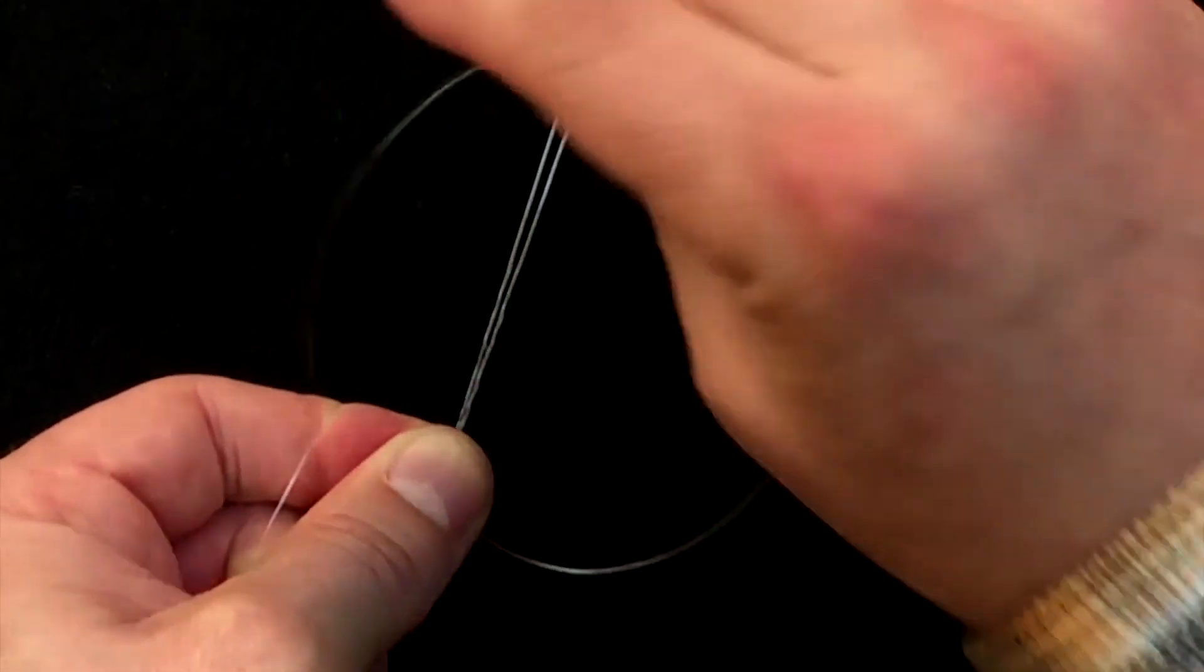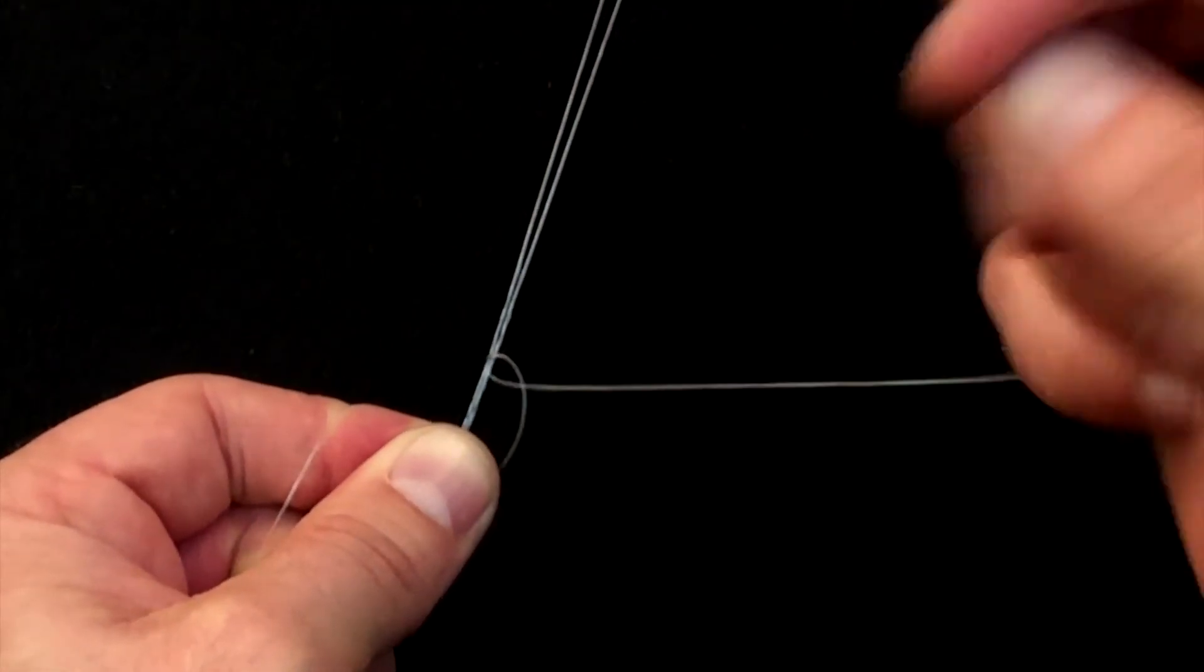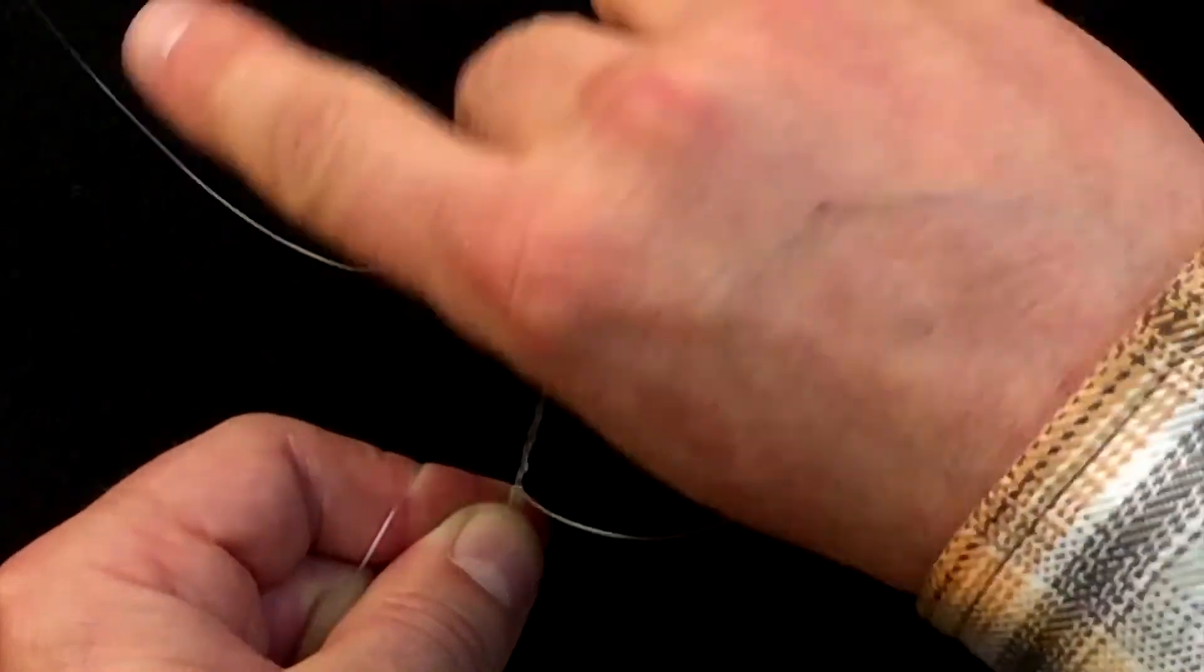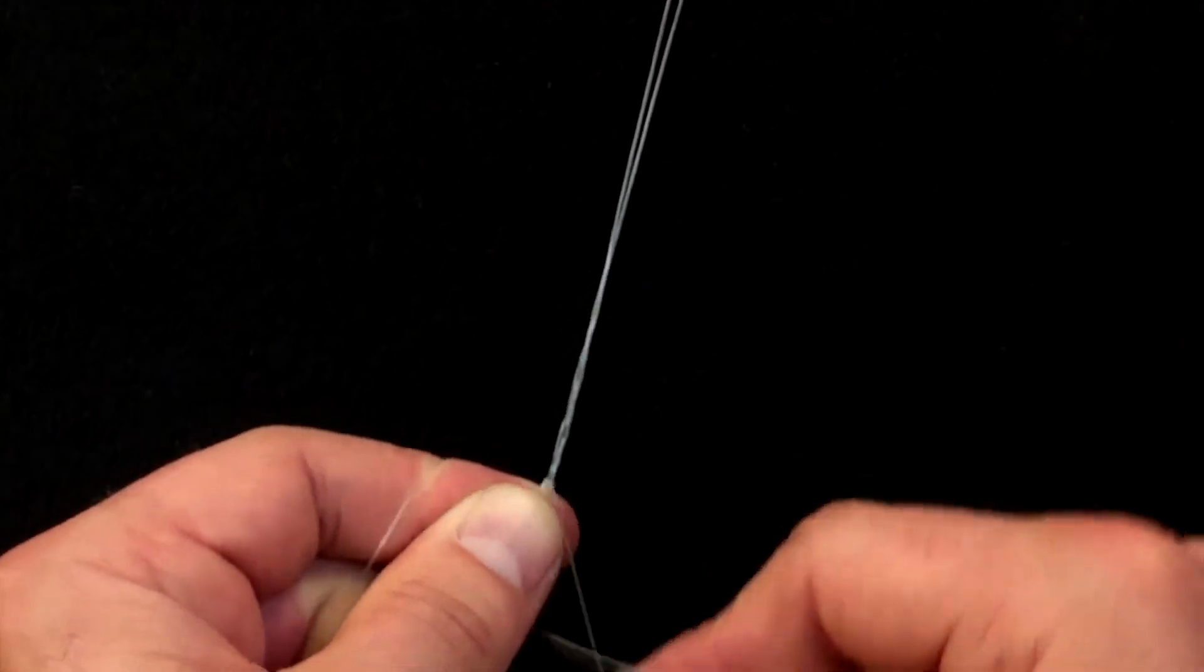Then I'm going to take the tag end around both legs, secure it. I'm going to do this two more times, total of three half hitches.